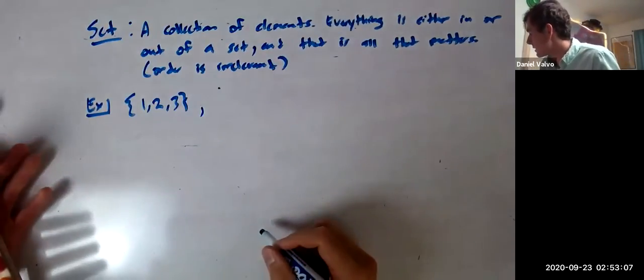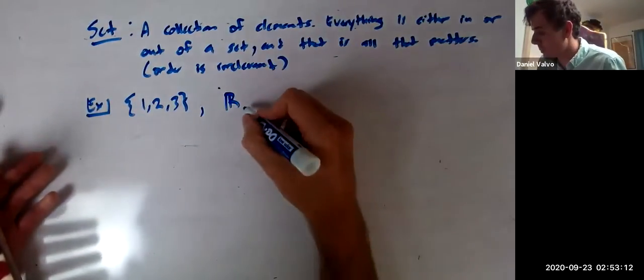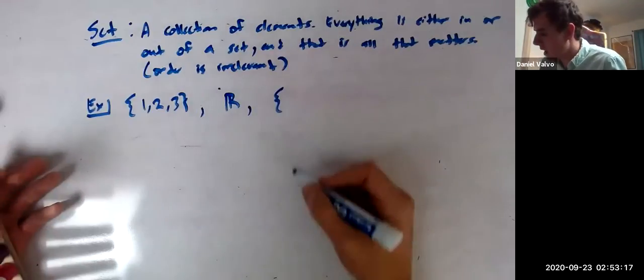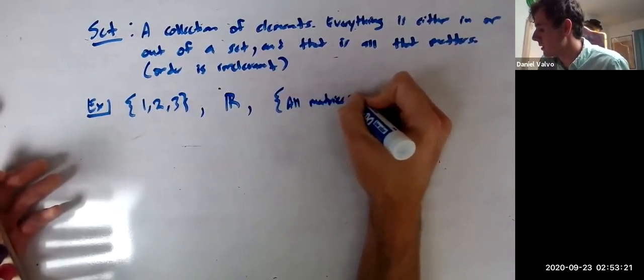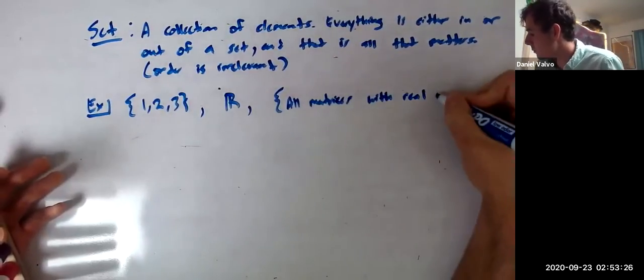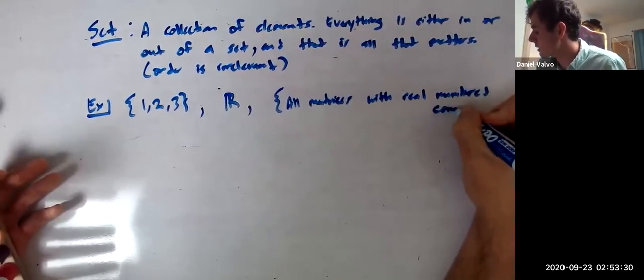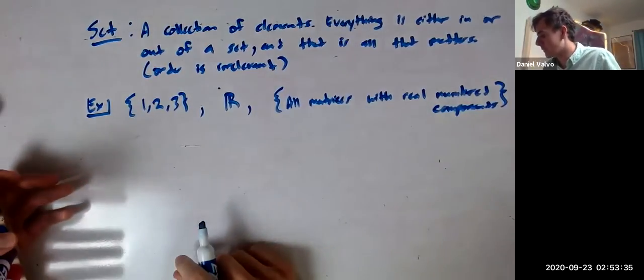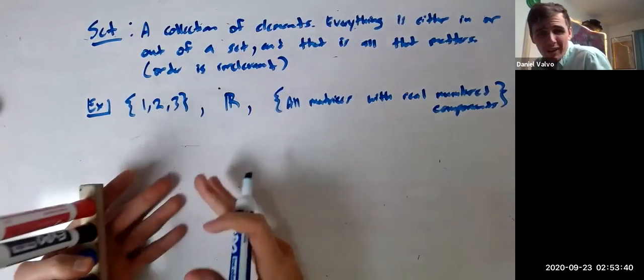Or you can have the set that is R, and that is a set of all the real numbers. Or you can have the set that's the set of, you know, like all matrices with real numbered components. For those linear algebra cats out there, right? So these are just sets. Like whatever's in curly brace, it just tells you all of these things. It's the collection of items.